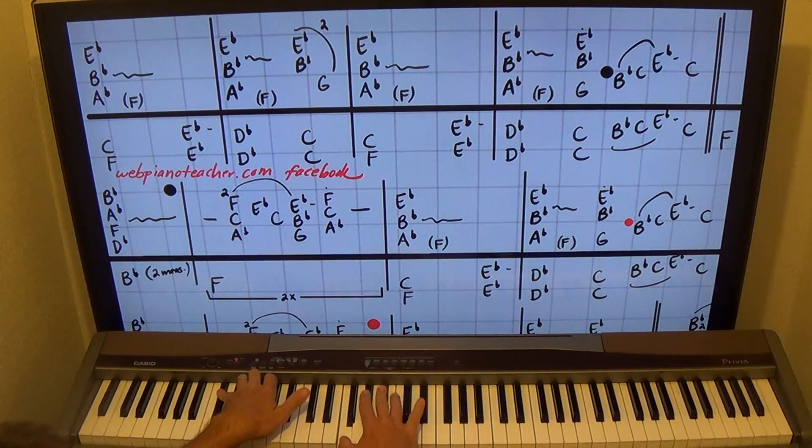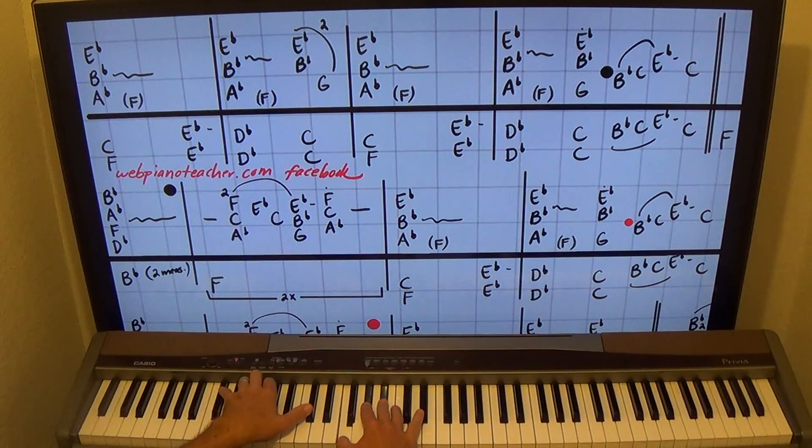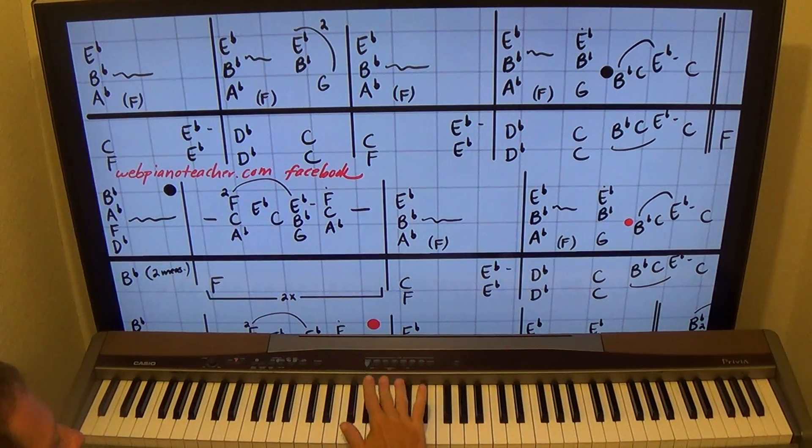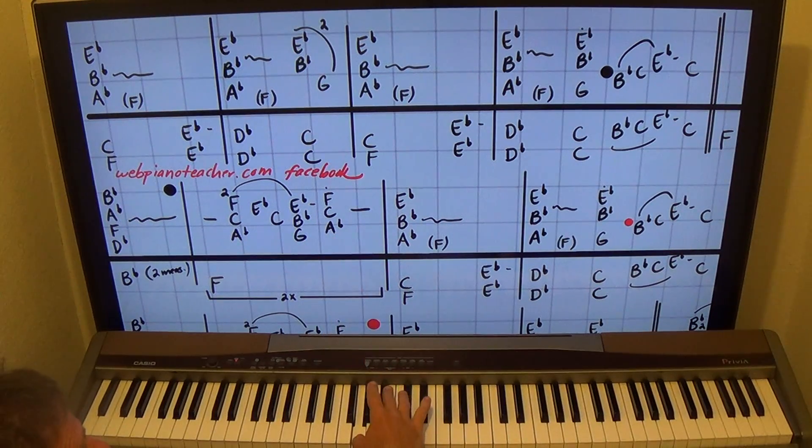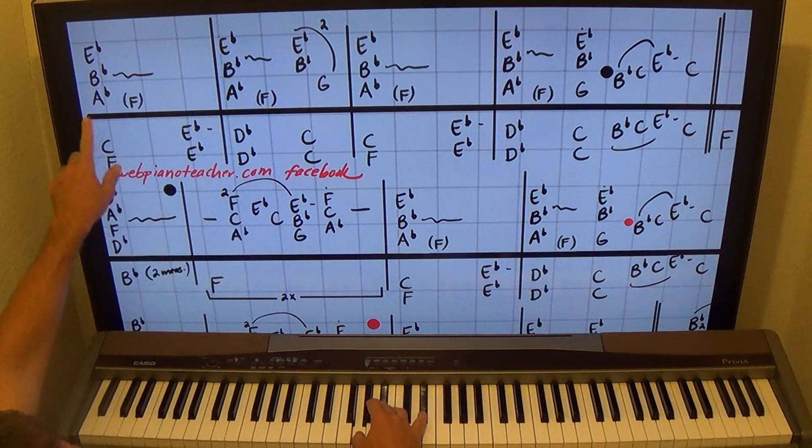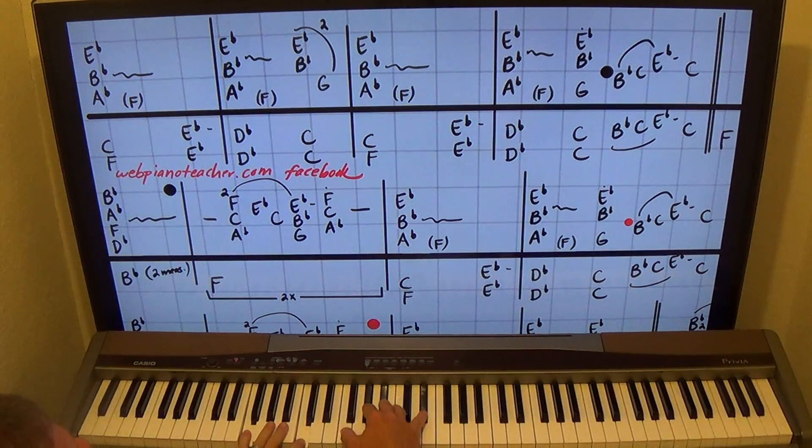So do it for two counts. One, two. While the left hand does a D flat octave. Then I'll do B flat, E flat, with three and five thumb on G. Two times while the left hand goes to C. So from the very beginning. One, two, three.